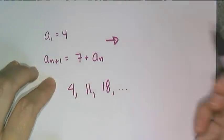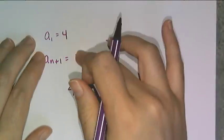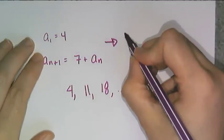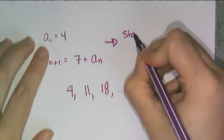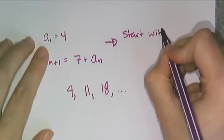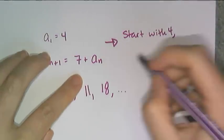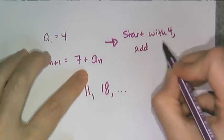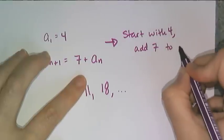Now if I wanted to convert this to sentence format to make sure I understood what it meant, this says start with 4, because the very first term is 4. And then this thing says add, because there's an addition, 7 to the previous.